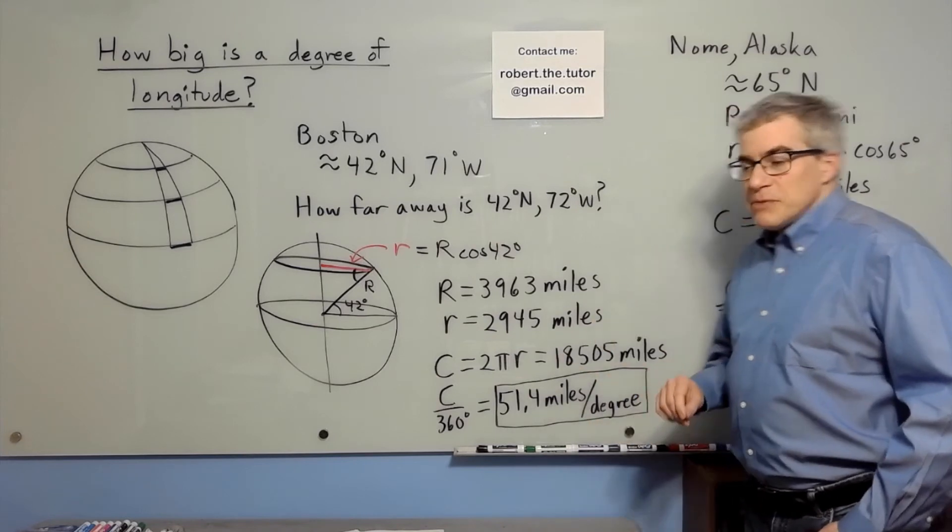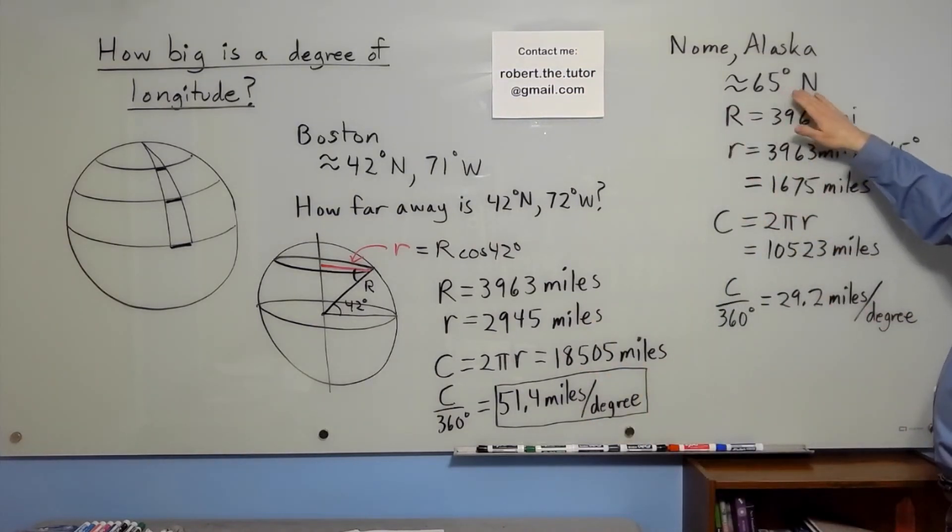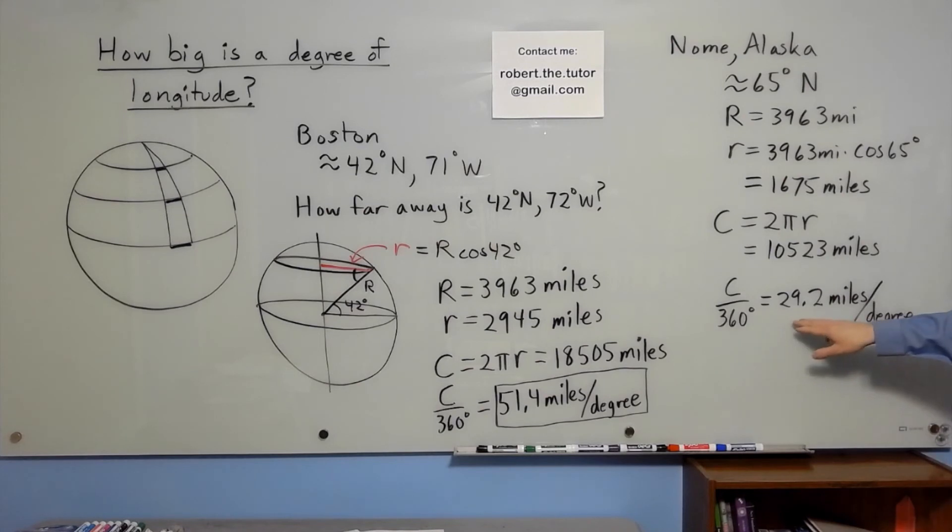Another example, Nome, Alaska, approximately 65 degrees north. Radius of the Earth is the same. We use cosine 65 instead, multiply by 2 pi to get circumference, divide by 360 degrees, and we get 29.2 miles per degree.